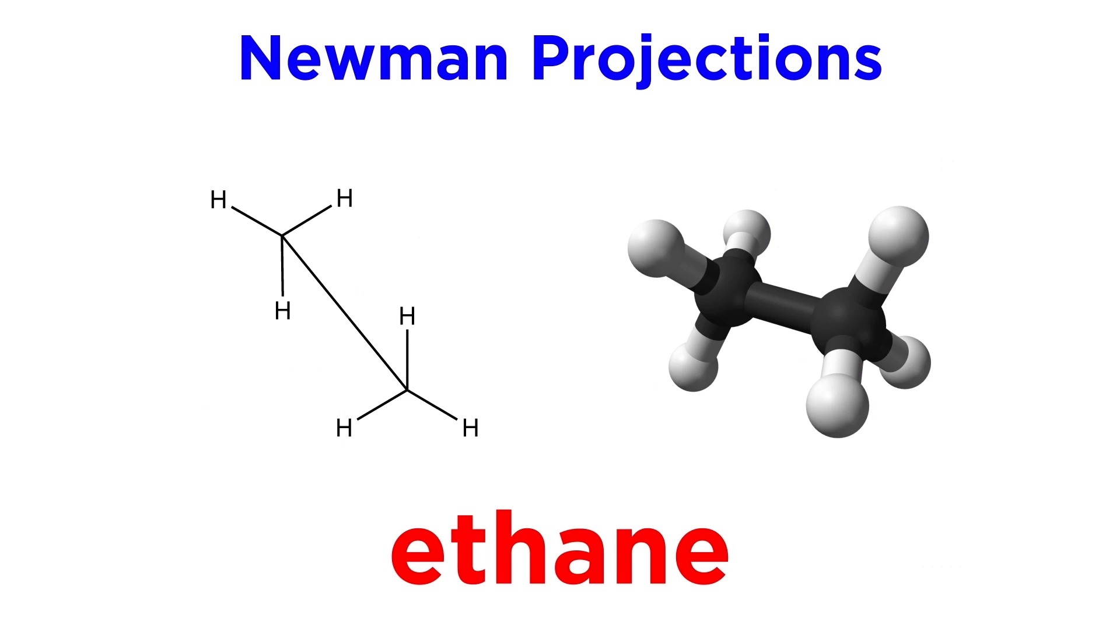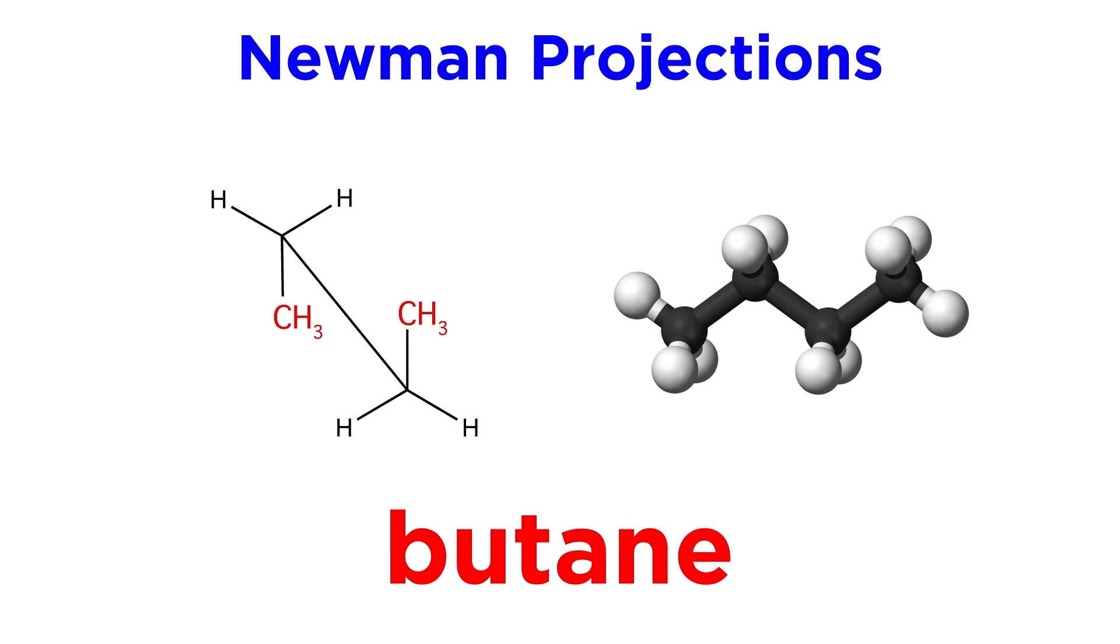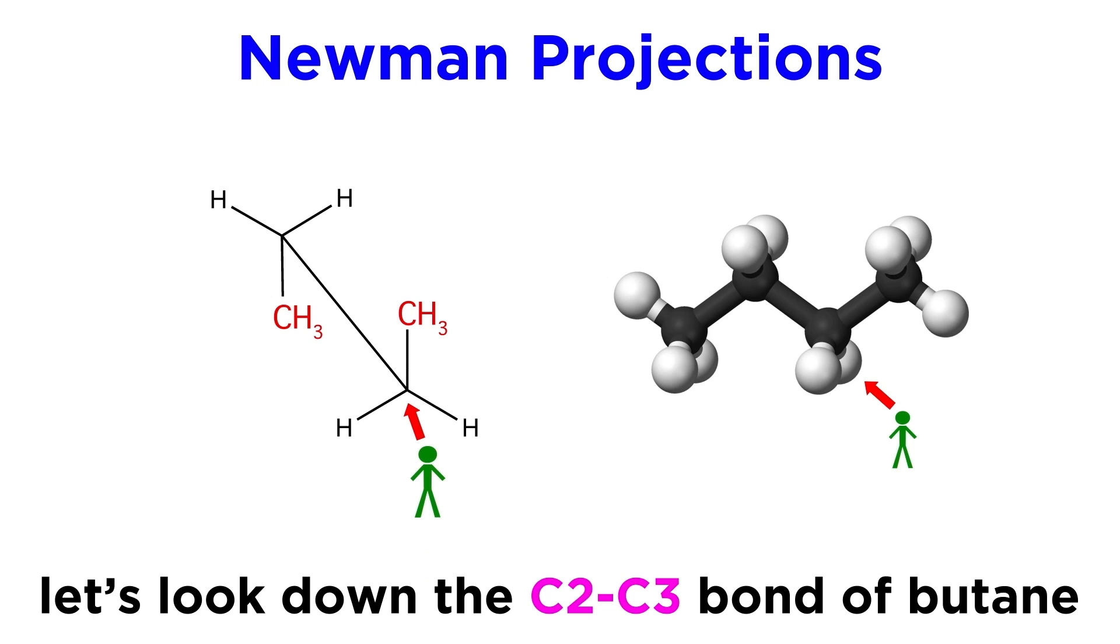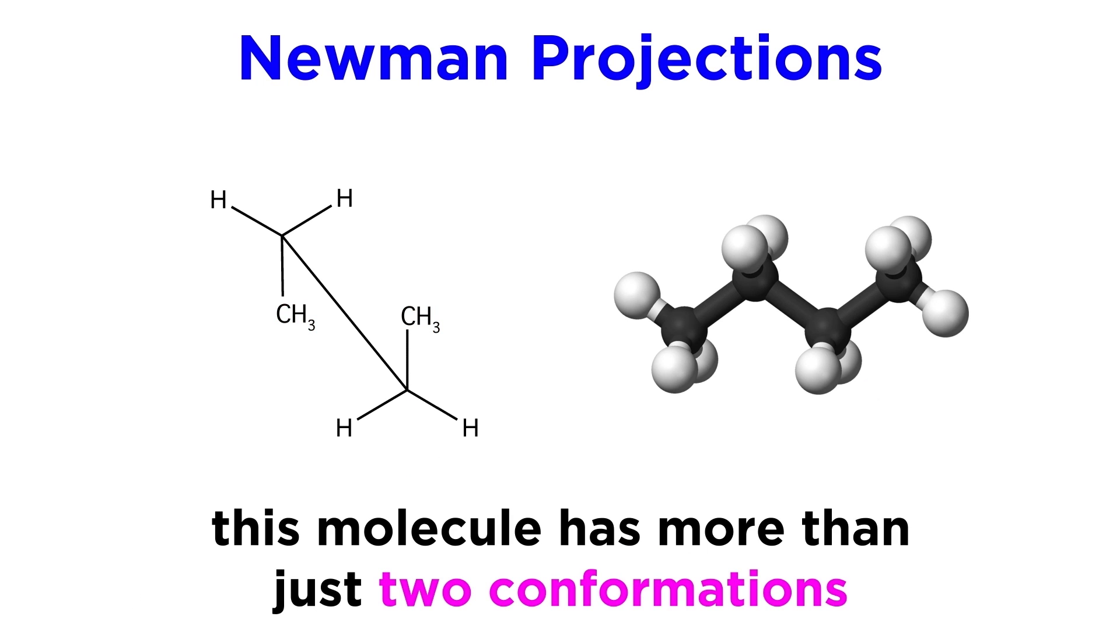Now let's make things a little more complicated. Let's turn this into a molecule of butane by replacing one hydrogen on each of these carbons with a methyl group. So we are looking down the C2-C3 bond of butane. Now we have more than just two conformations, because these groups are not all the same.